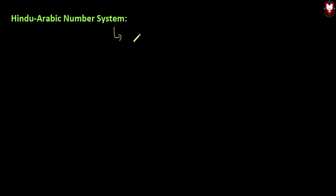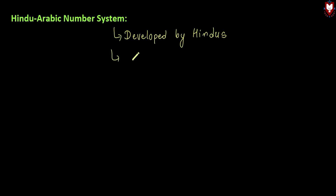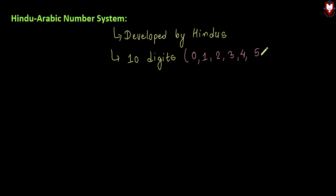The Hindu Arabic number system was developed by Hindus. In this number system we have 10 digits.